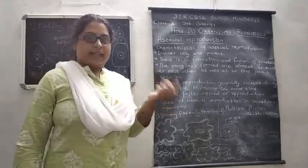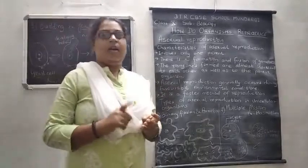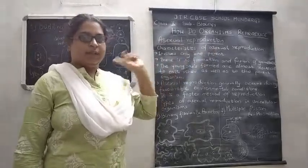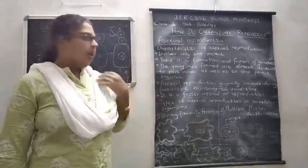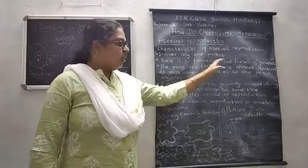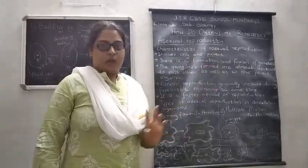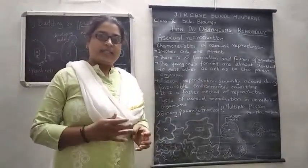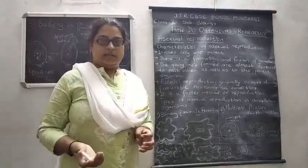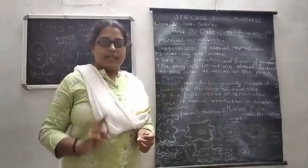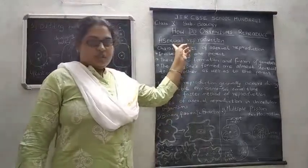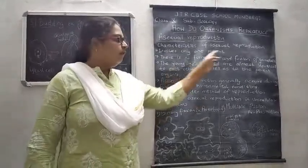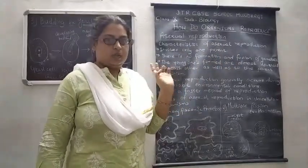First characteristic: it involves only one single organism — only one parent. Second, there is no formation and fusion of gametes. Gametes are the reproductive cells. In a single-celled organism, the body is made up of only one cell, so in this asexual method the organism does not form any kind of reproductive cells.